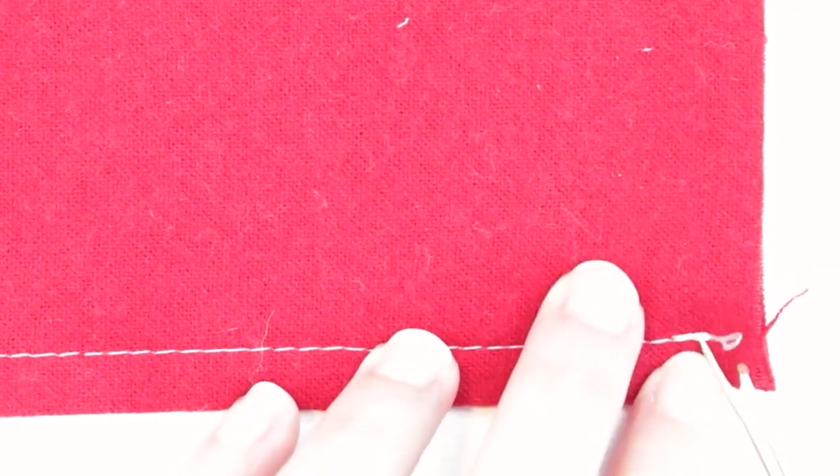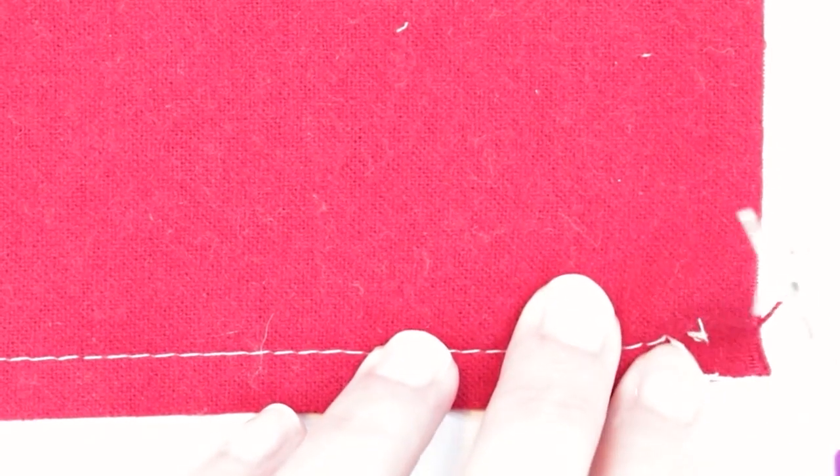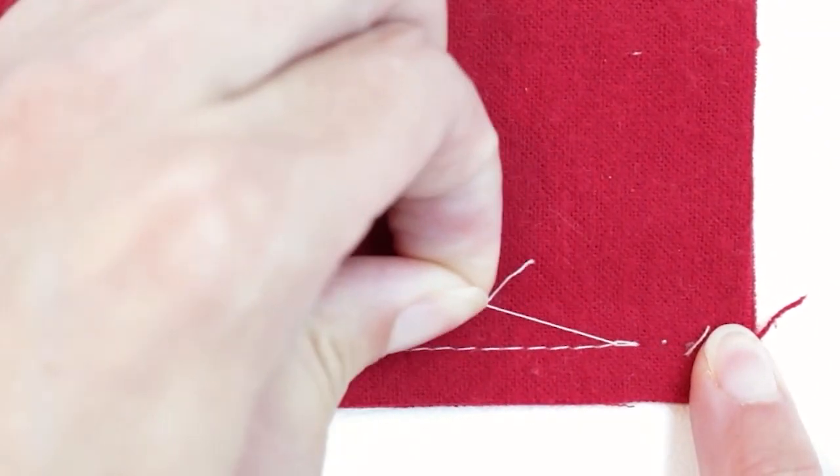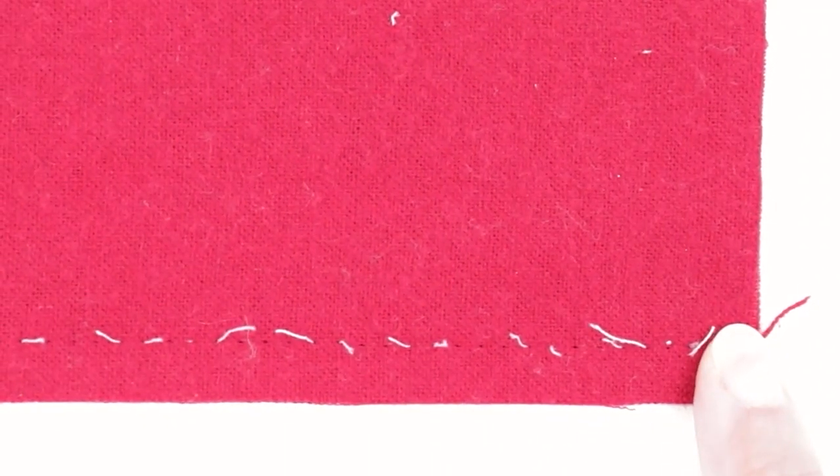So I'm going to use my seam ripper to pull up those stitches. I'm just going to pull up the stitches here at the beginning, and I'm going to grab my thread and pull. And because I undid all of those stitches, it comes out nice and easy.